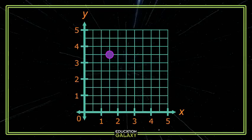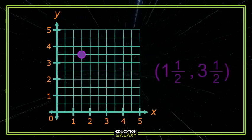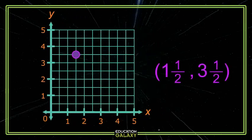So, along the x-axis, my point is between 1 and 2. It is at 1 and a half along the x-axis. And, between the 3 and the 4, or 3 and a half along the y-axis. This is the point 1 and a half, 3 and a half.